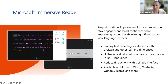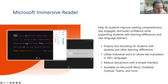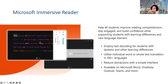I worked with dyslexic students in the past, and the Immersive Reader looks really interesting. It appears the text is color-coded — possibly purple for nouns or something like that. It's interesting to see how it identifies parts of speech.